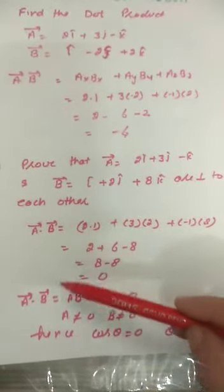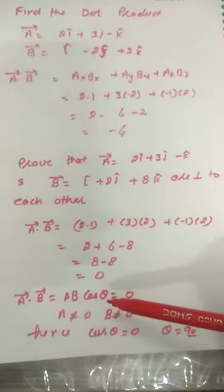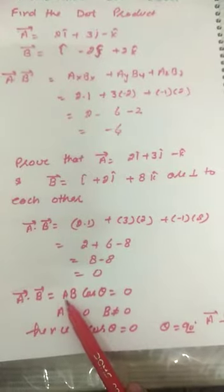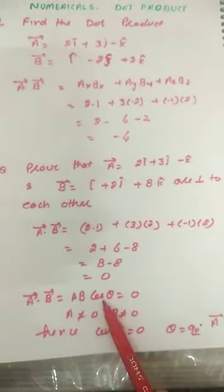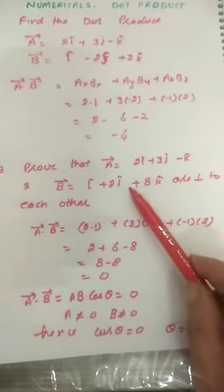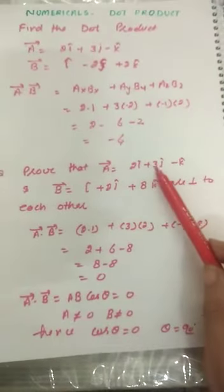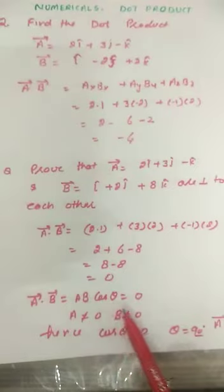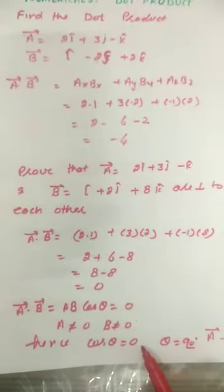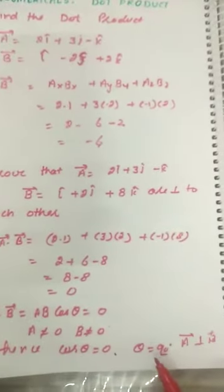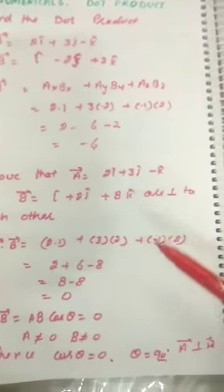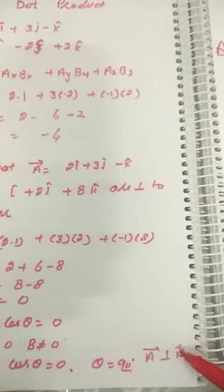We know that vector a dot vector b equals ab·cosθ, and this equals 0. Here a is the magnitude of vector a, b is the magnitude of vector b, and cosθ is the angle between them. Since these are not zero vectors, their magnitudes are not 0. So cosθ must be 0, which is only true when θ is 90 degrees. This means the angle between vector a and vector b is 90 degrees, so vector a is perpendicular to vector b.